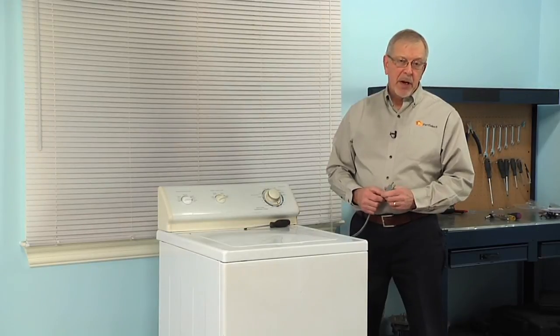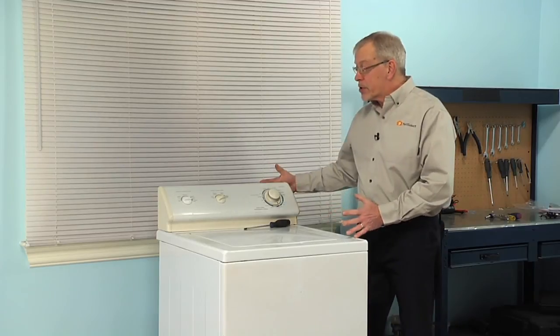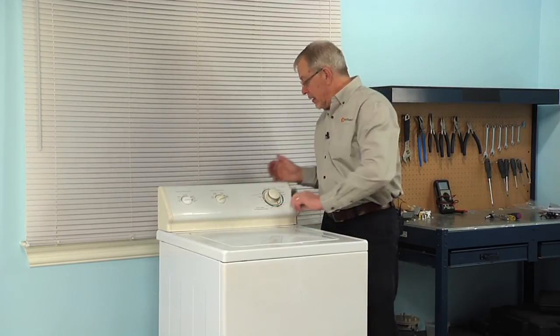Now to do this repair, we will need to disconnect power to the appliance, so simply pull the plug, and we'll also need to pull the washer far enough forward that we can access the upper back panel.